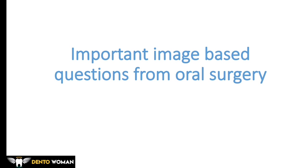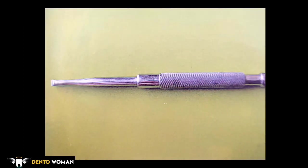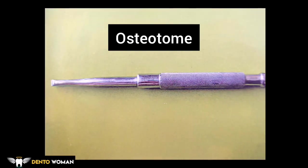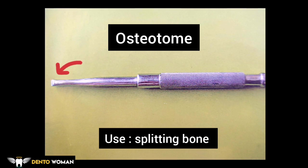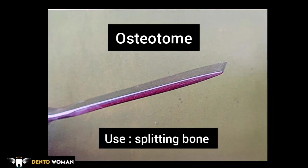Osteotome — this is an instrument used for splitting bone. It has a cylindrical handle which is serrated for good grip. The end of the handle is flat where it is tapped with the mallet. The blade is flat and rectangular, and the blade and cutting edges may be available in different sizes depending on its use.